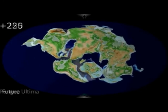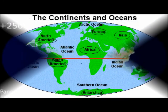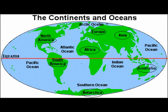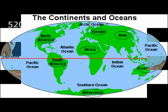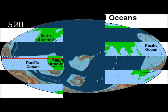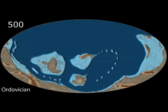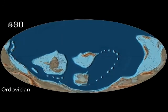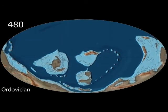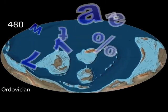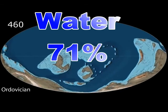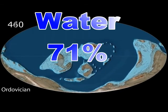Children, now we are going to see about this lesson. It deals about the continents and oceans in detail. The earth is covered by 71% of water and 29% of land of the earth's surface.